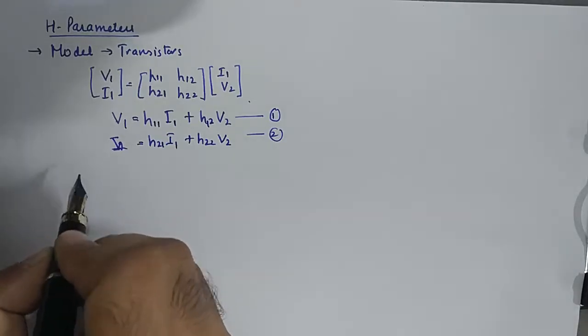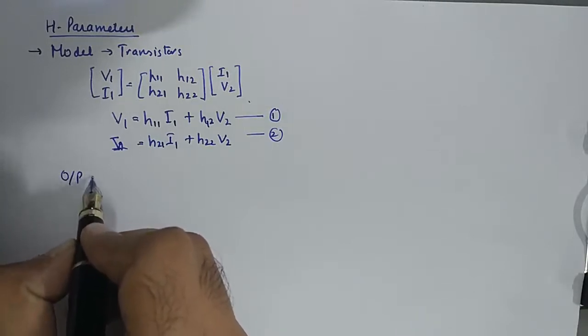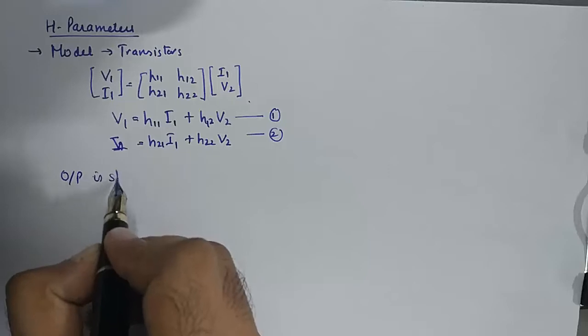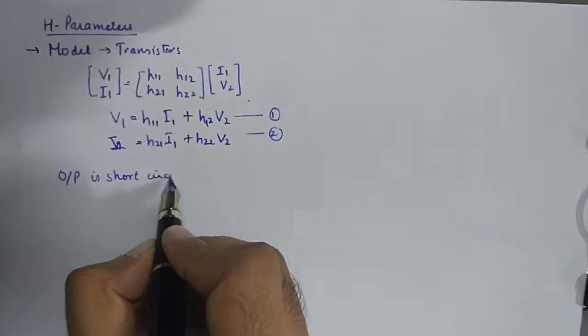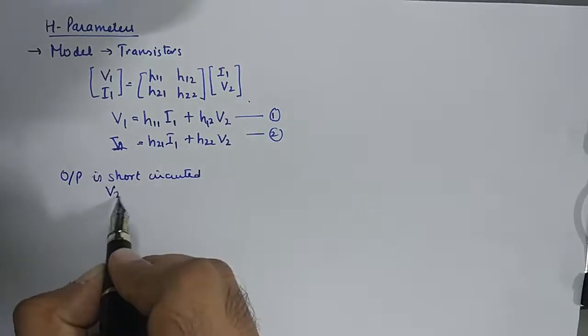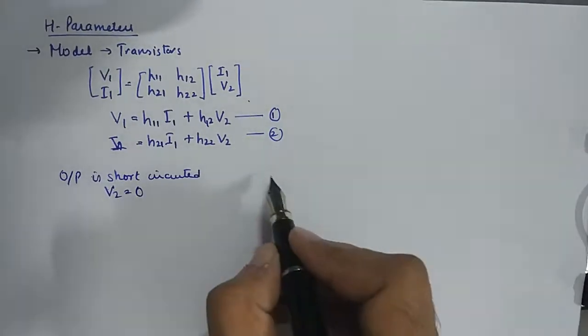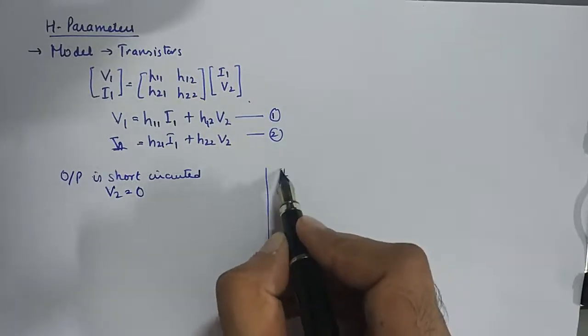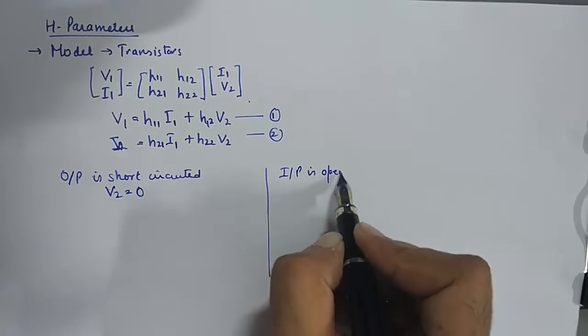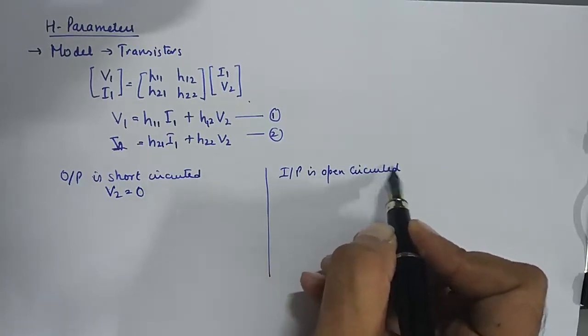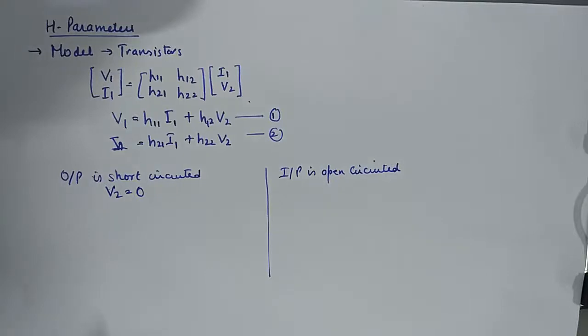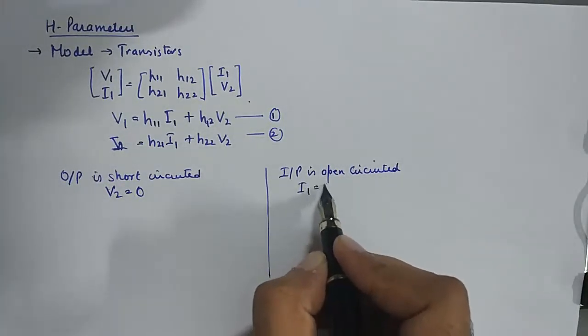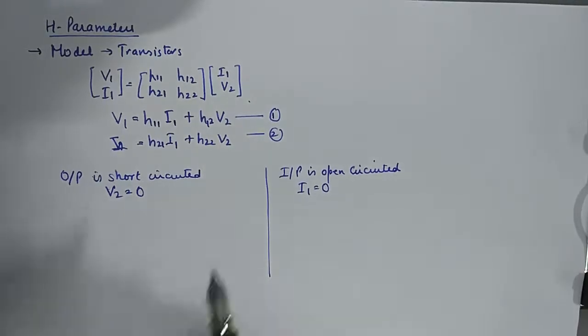And the two conditions that you need to remember is that the output is short circuited. So V2 needs to be 0 in condition 1, and in the second condition, input is open circuited. So when we do that, I1 becomes equivalent to 0. That is what makes it a hybrid thing.